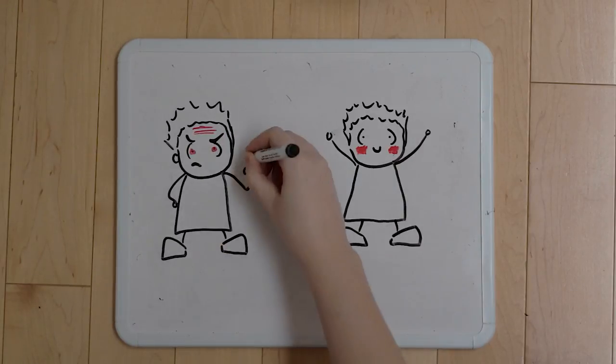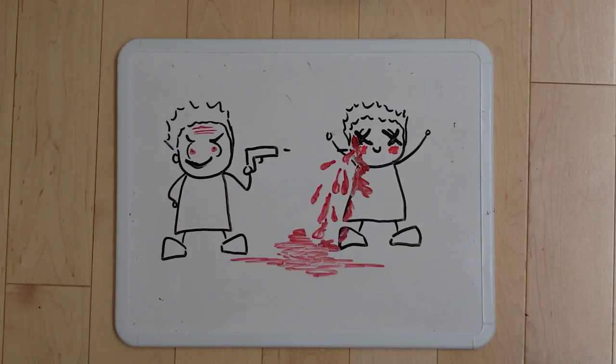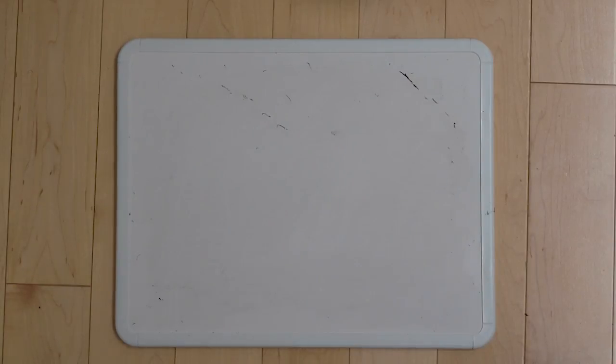When you're happy and healthy, you have rosy cheeks. When wars are fought, blood is spilled. This is why red has been associated since the beginning of time with bloodshed, aggression, and anger.